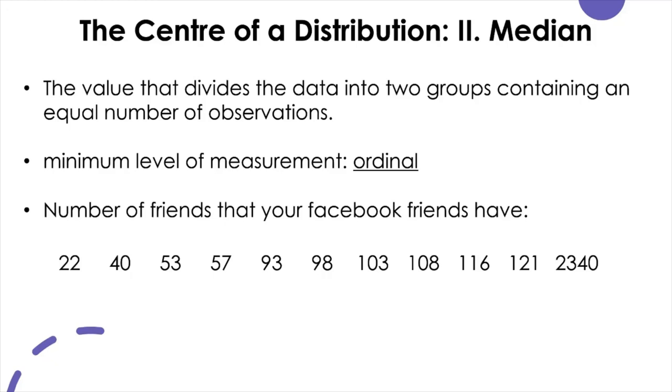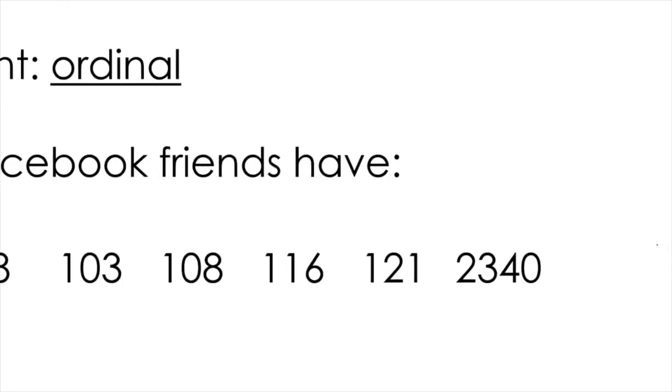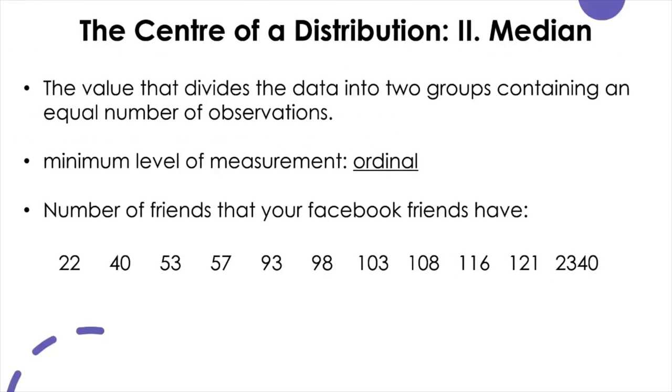Here we have an odd number of data, 11. So in this case, you only have to find the middle number, and the middle number here is 98. That's because from 98, above and below, you have 5 and 5. We have exactly the same number of data, 5 and 5, above and below this value of 98.